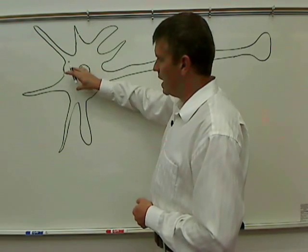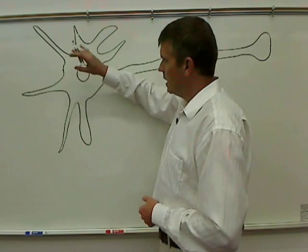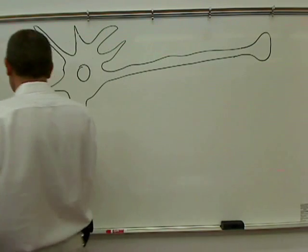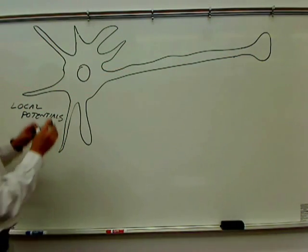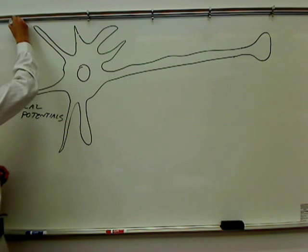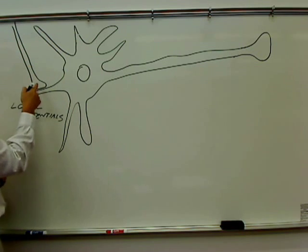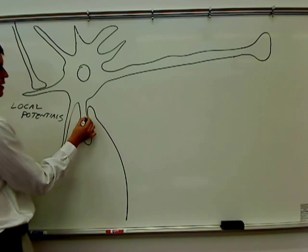The soma or cell body and the dendrites, in terms of how they function, this is where the cell undergoes what are called local potentials. This cell will have other neurons connecting to it by axons, so axon terminals contributing to it. I'm just going to draw two for right now.